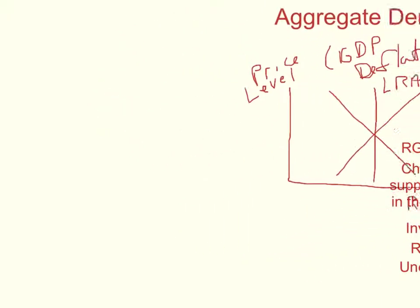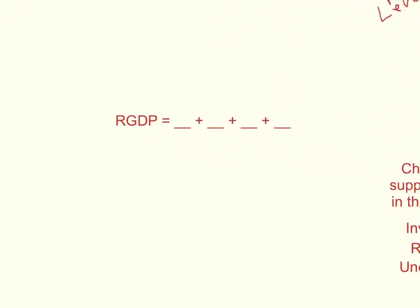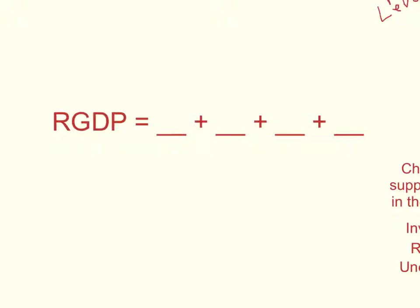Now let's take a look at the last of the four bullet points we're covering in this tutorial: list the four components that contribute to the aggregate demand for goods and services. You know this formula — it's the formula for gross domestic product. The first component is consumption, the second is investment or business spending, and we have government expenditures and net exports. These are the four components that contribute to the aggregate demand for goods and services.